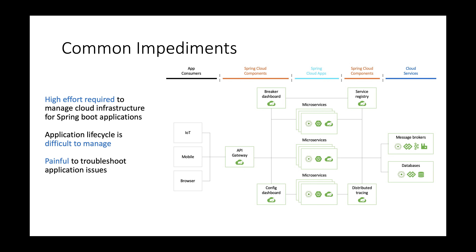Regardless of where you're deploying — virtual machines, containers, or on-prem or cloud, any cloud: Azure, Amazon, Google, Alibaba — you are on point for building a dynamically scaling infrastructure to deploy all of these. It's a high effort.